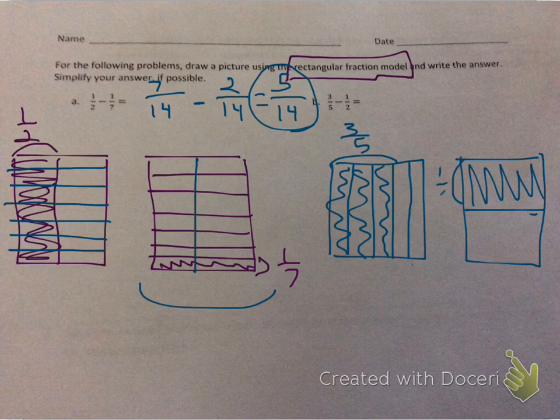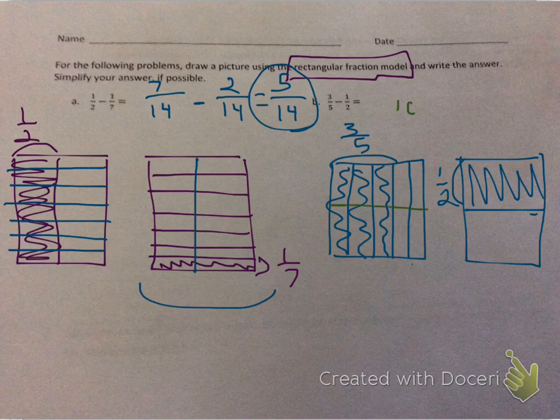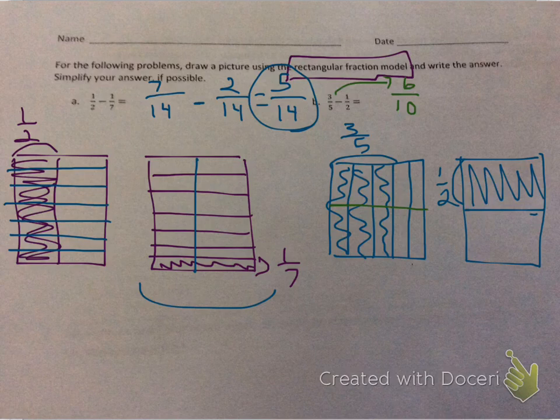All right, now we need to portion them again using the other fraction's denominator. This model of 3/5 needs to be portioned in half. So now instead of 5, there is a denominator of 10, and there are 6 boxes shaded. So 3/5 is equivalent to 6/10.